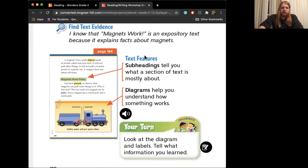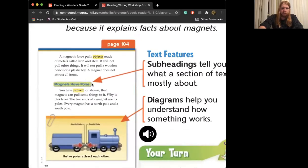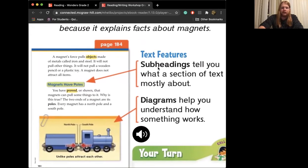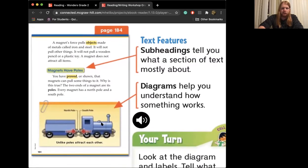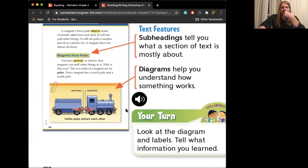Some of the text features that we see in Magnets Work are subheadings. Here's a subheading right here - Magnets have poles. It's kind of like a title, a title in the text. And then diagrams. So you see how there's a diagram right here. That's North Pole and South Pole, which are labels to the diagram. And it shows us that unlike poles attract each other.